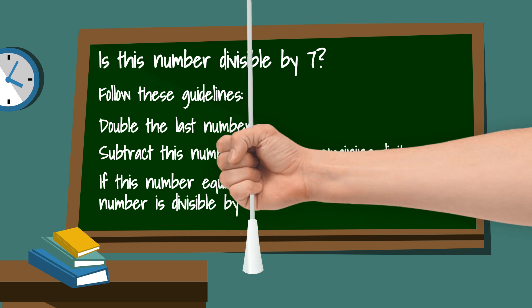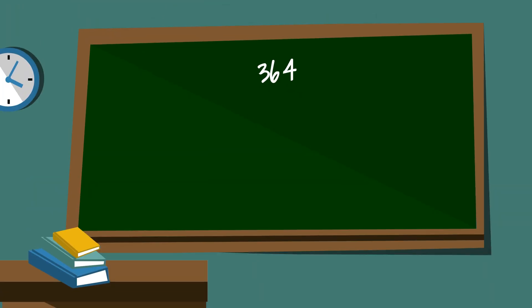Let's first look at 364. Let's take the last digit 4 and double it and that equals 8. Now we have 36 remaining when we remove the 4. 36 minus 8 is 28.